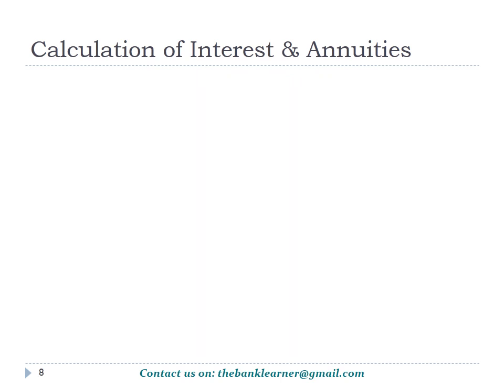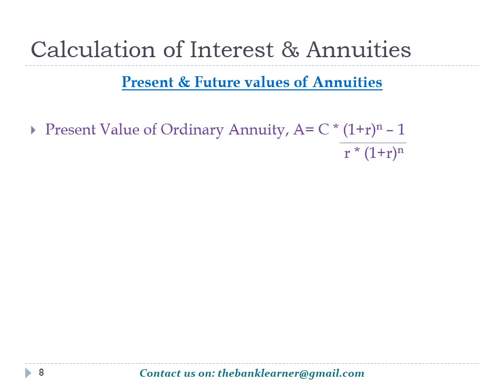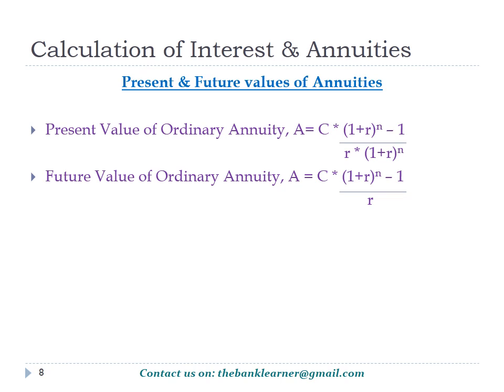Now, on the calculation side, let's see how to calculate the present value and future value of ordinary annuity. The present value of annuity is expressed as A = C × ((1 + R)^n − 1) / (R × (1 + R)^n), where C is the cash flow per period, R is the rate of interest, and n is the number of payments.